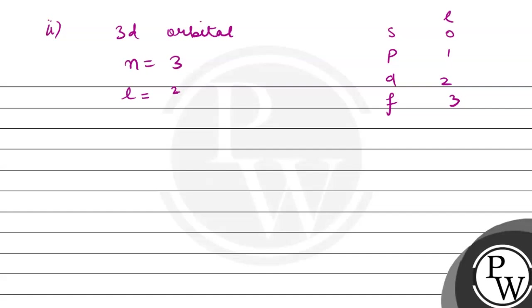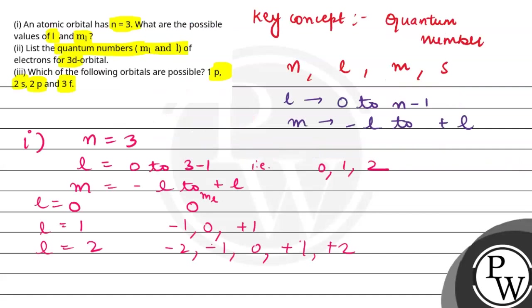So for d, l value is 2. If we are talking about l value 2, then m is equal to minus l to plus l. That means it is equal to minus 2, minus 1, 0, plus 1 and plus 2. That means in d, we have 5 orbitals: minus 2, minus 1, 0, plus 1 and plus 2.